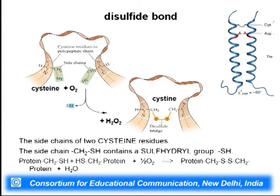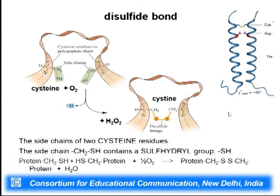Disulfide bonds are covalent interactions found in tertiary and quaternary structures. Cysteine is the amino acid that in the presence of oxygen will form a dimer with release of peroxide. The side chain SH groups present at very different locations in the polypeptide come closer, oxygen causes oxidation, hydrogen is removed, and a disulfide bridge forms. It is a covalent interaction and a very strong bond, which may be formed within the same chain or between two different chains.